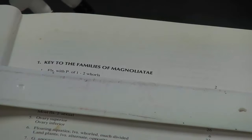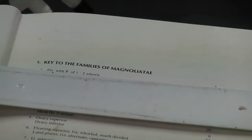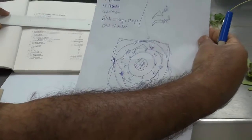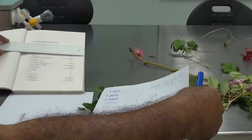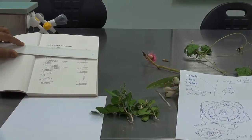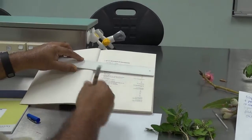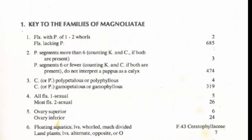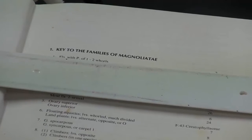Let's start keying out this specimen. This is the specimen we've been dealing with. We have collected all the information, written down in a pictorial manner. Using that information and the specimen in front of us, we should be able to identify it into family and then into the genus. We know that it is a dicot, so we start with number one. Flowers with perianth — P means perianth — of one to two layers. We have two layers, so the answer is yes, and it goes to number two.